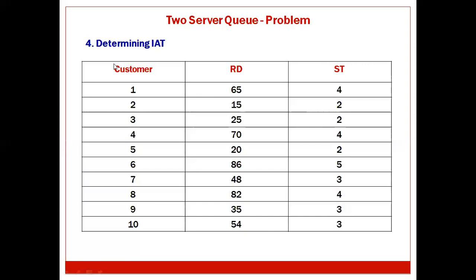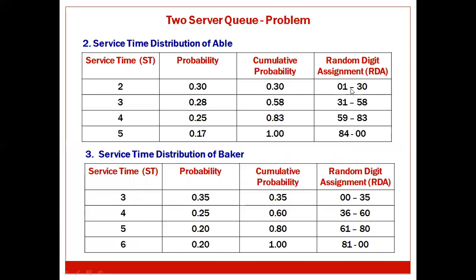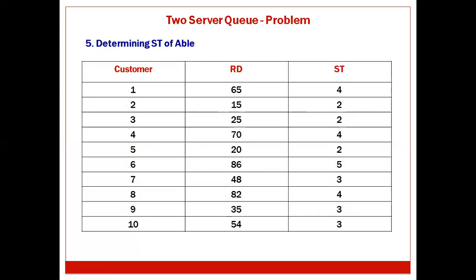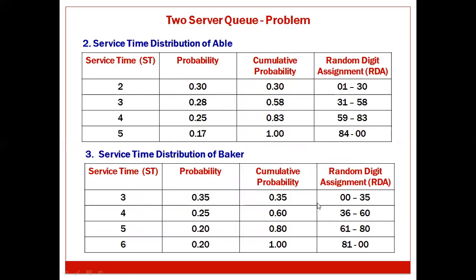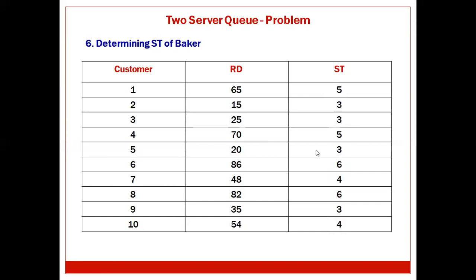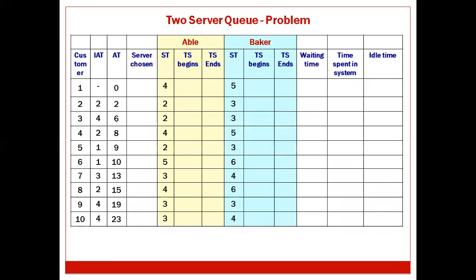The fifth table determines the service time of Able for all 10 customers using random digits and Able's RDA table. The sixth table determines the service time of Baker similarly, using Baker's RDA: 0–35 maps to ST=3, 36–60 to ST=4, 61–80 to ST=5, and 81–00 to ST=6. All these tables must be prepared before building the main simulation table.